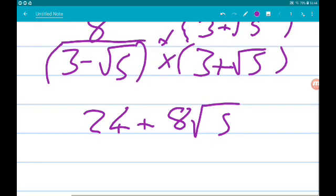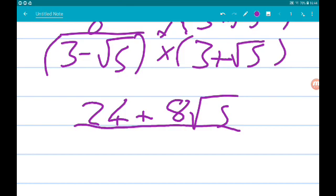And on the bottom we always get the first term squared, so that's going to be 9 minus the second term squared, which is 5.